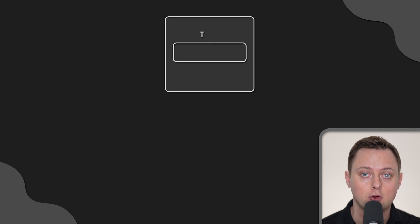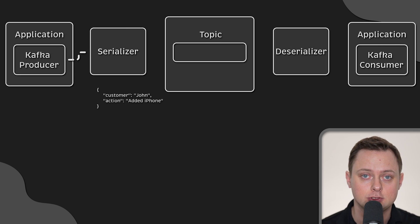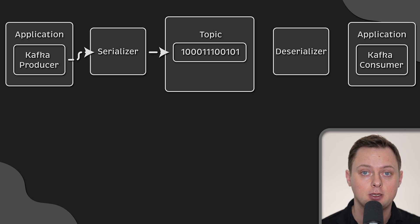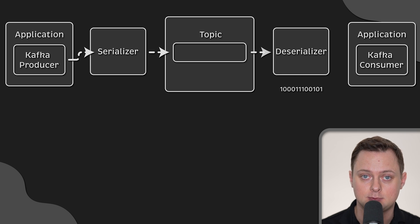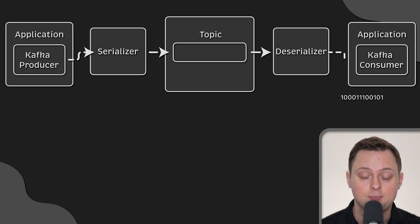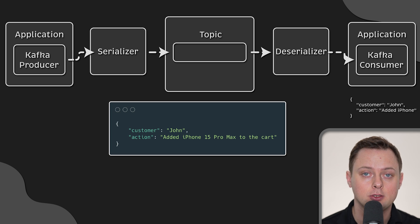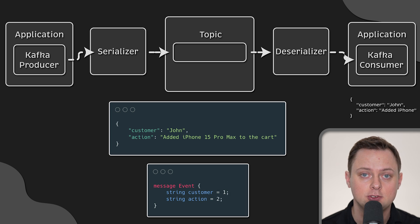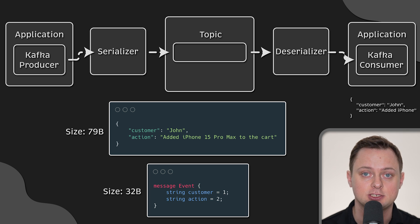Messages or records are stored as serialized bytes. Producers serialize the message to a byte array before publishing to Kafka. On the topic, it's always just serialized data, and the consumer is responsible for deserializing the message. To make your data pipeline more efficient, instead of JSON you can use protobuf messages, which is a common practice. This will significantly reduce the size of the message and decrease the latency for publishing and reading data.